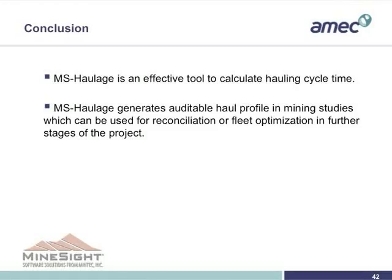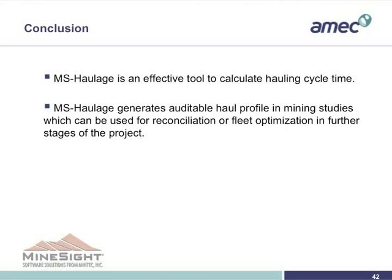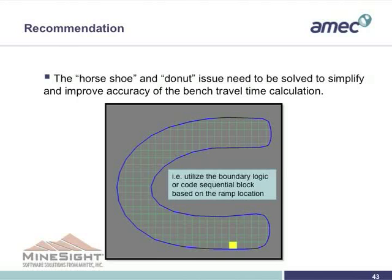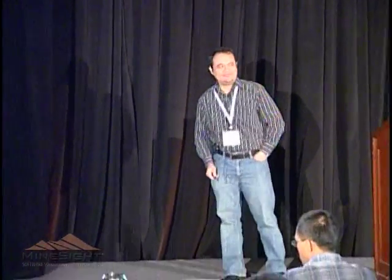The conclusion is that this approach is really helpful and it's auditable — anybody can check it and see it. This is the haul profile, and that's why the cycle time is there. It can also be used for reconciliation later in real operations or at future stages of the project. One remaining challenge is if we can solve the horseshoe or donut shape automatically — instead of just a simple cross, some programming or developer help to solve that issue would be great. Thank you.